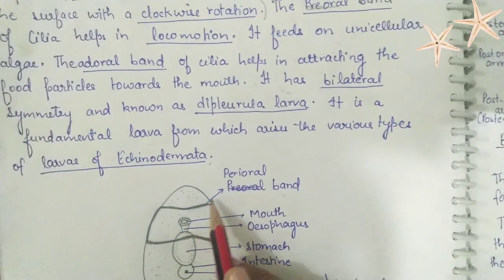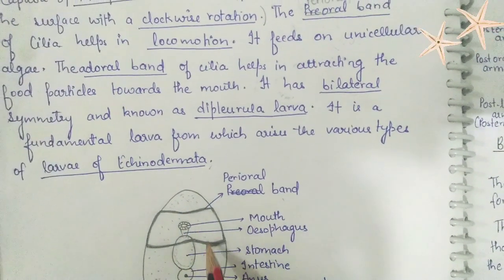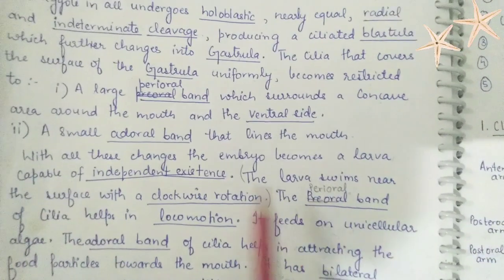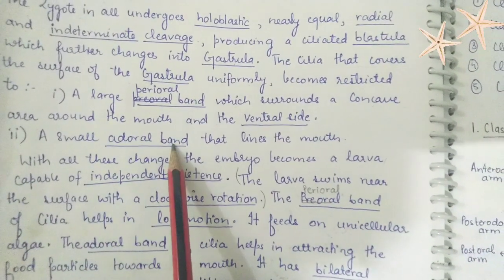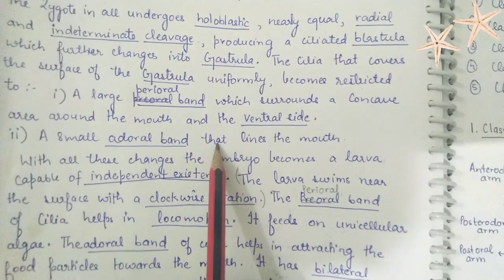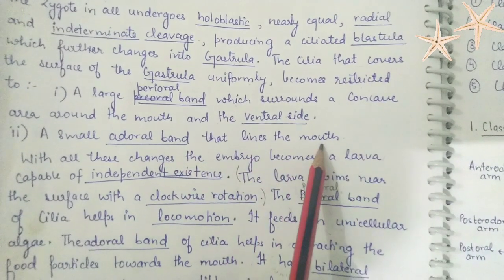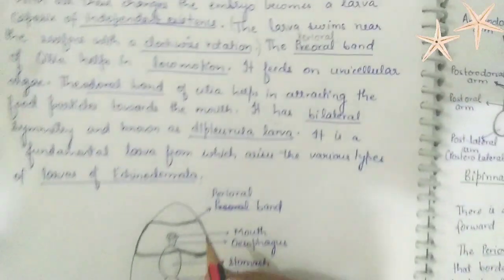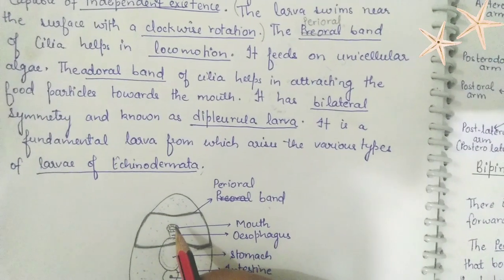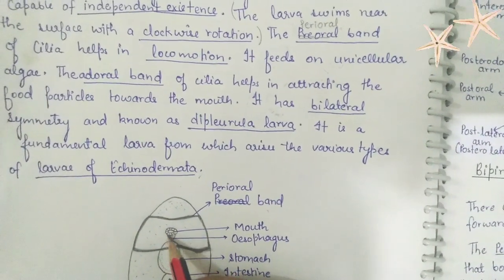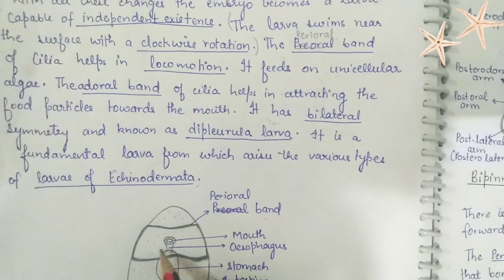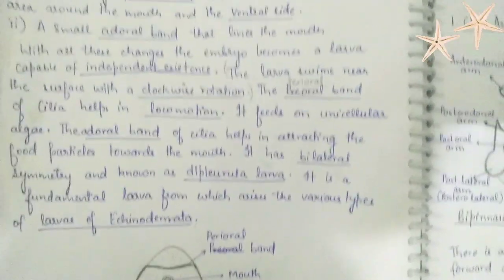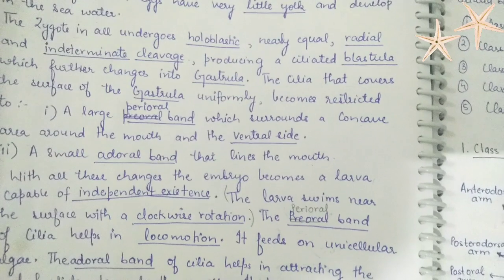We can see that the perioral band surrounds the mouth and all other parts. The next thing is a small adoral band. This adoral band lines the mouth — the adoral band is around the mouth. So the adoral band lies here, and these are the restricted areas of the cilia where the cilia is present.